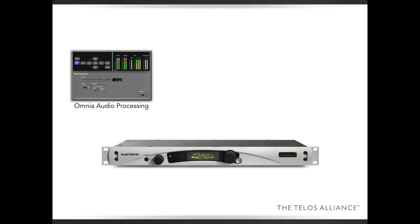Why? Because it's designed specifically for streaming — designed for a bit-rate-reduced codec like you have in an encoder. So it doesn't do clipping and it doesn't do simple look-ahead limiting. It's a very intelligent look-ahead limiting along with a three-band automatic gain control. There are different presets to choose from, and of course you can customize any of the presets that you like.